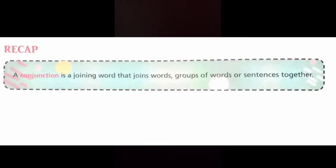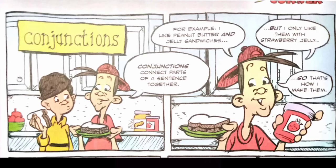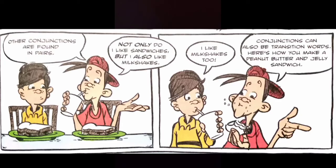Now let's recap the chapter. A conjunction is a joining word that joins words, groups of words, or sentences together. Conjunctions connect parts of a sentence together. For example, I like peanut butter and jelly sandwiches, but I only like them with strawberry jelly. So that's how I make them. Other conjunctions are found in pairs — not only do I like sandwiches, but I also like milkshakes.